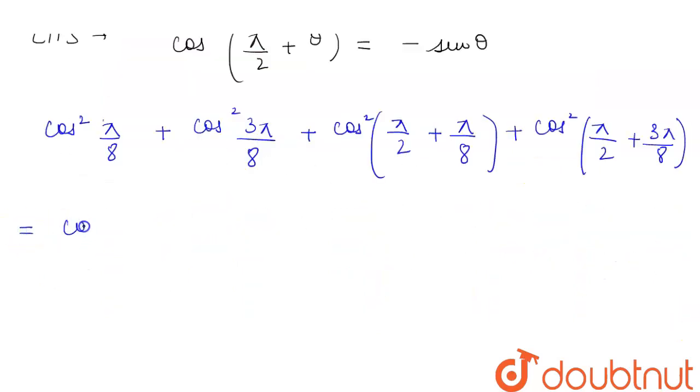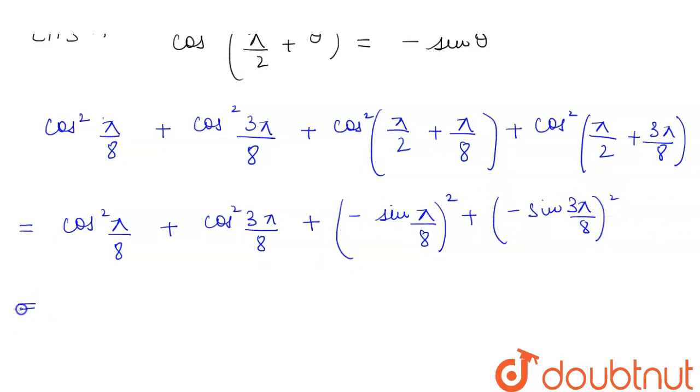Now we can write this as cos square pi by 8 plus cos square 3 pi by 8 plus, this will become minus of sin pi by 8 whole square plus minus of sin 3 pi by 8 whole square. This will be equal to cos square pi by 8 plus cos square 3 pi by 8 plus sin square pi by 8 plus sin square 3 pi by 8.